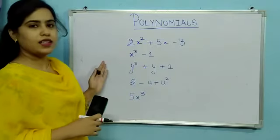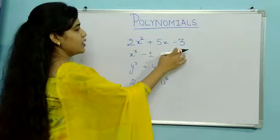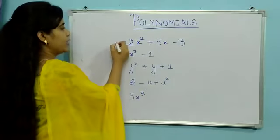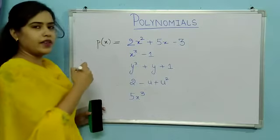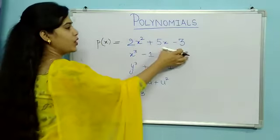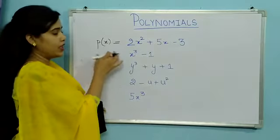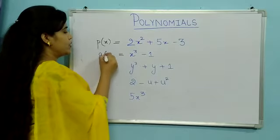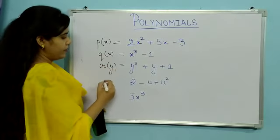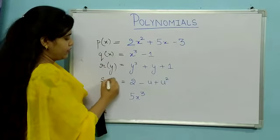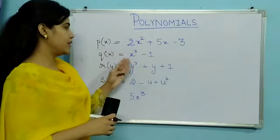Here you can see some examples of polynomials. This is a polynomial in variable x, so I can denote this as p of x. This whole polynomial is in variable x. Similarly, I have this equation named q of x, r of y, s of u, and so on. So here we have polynomial equations being named.